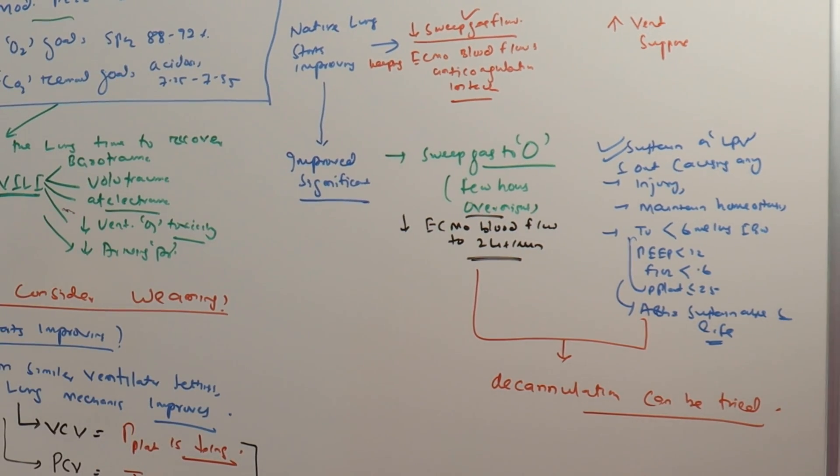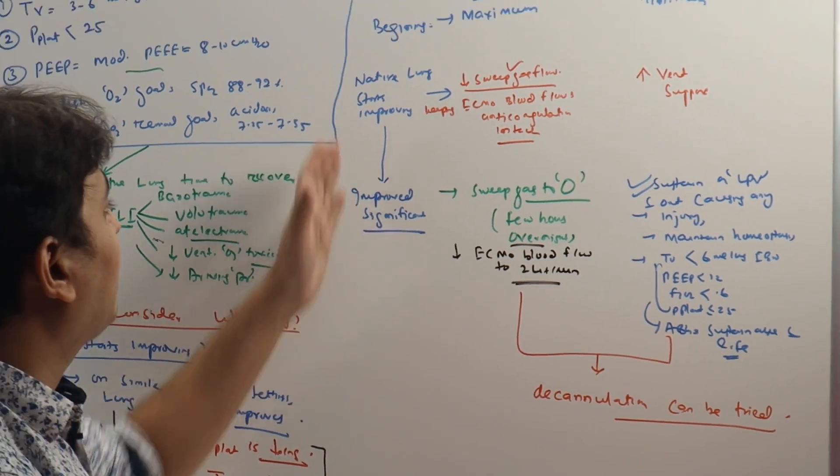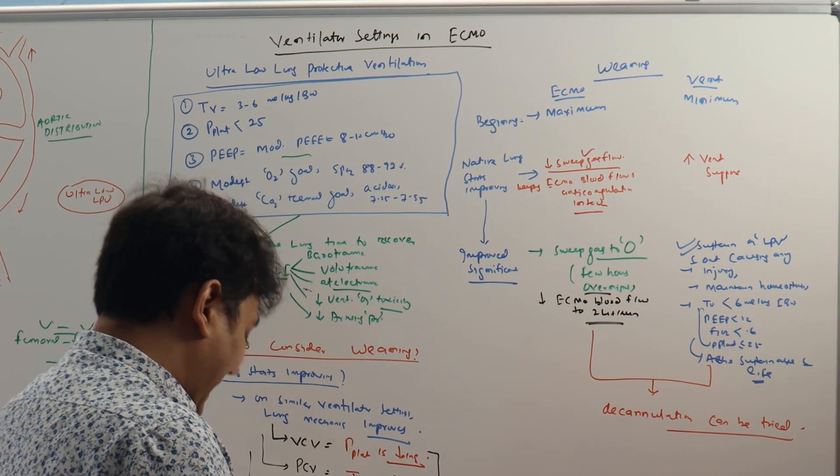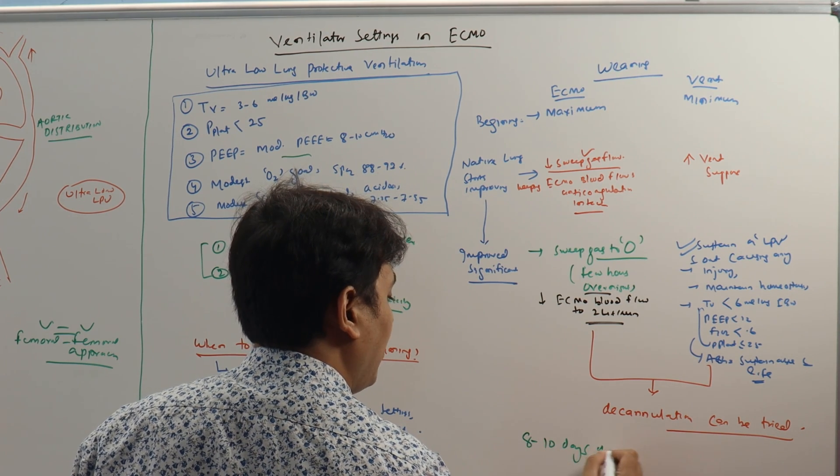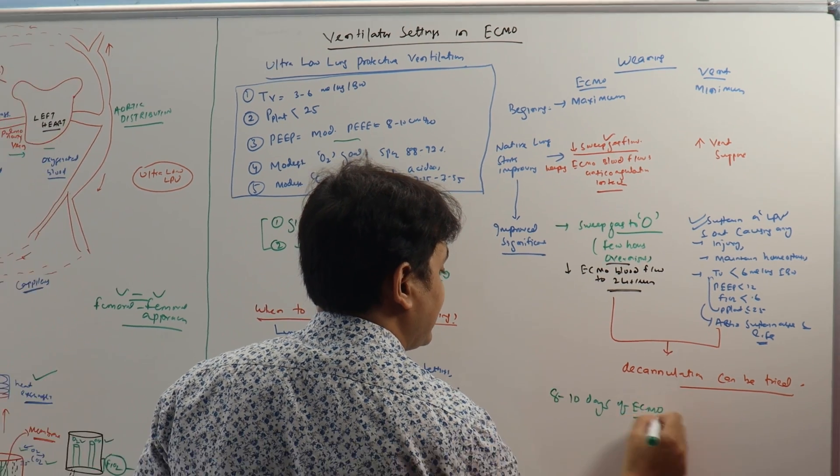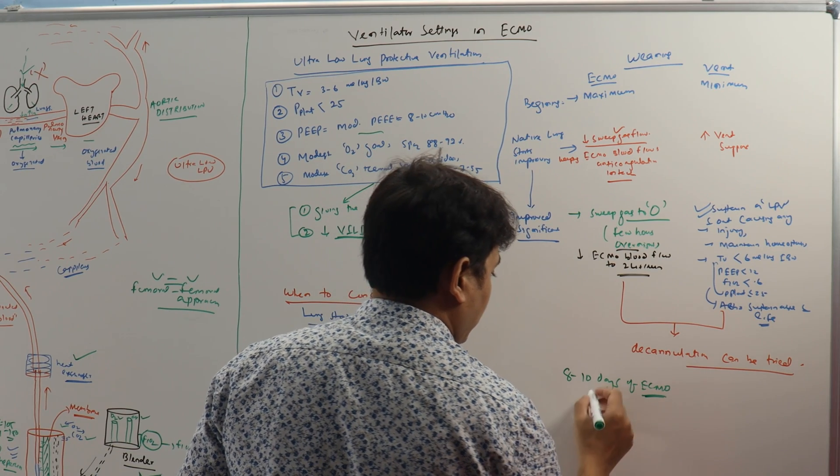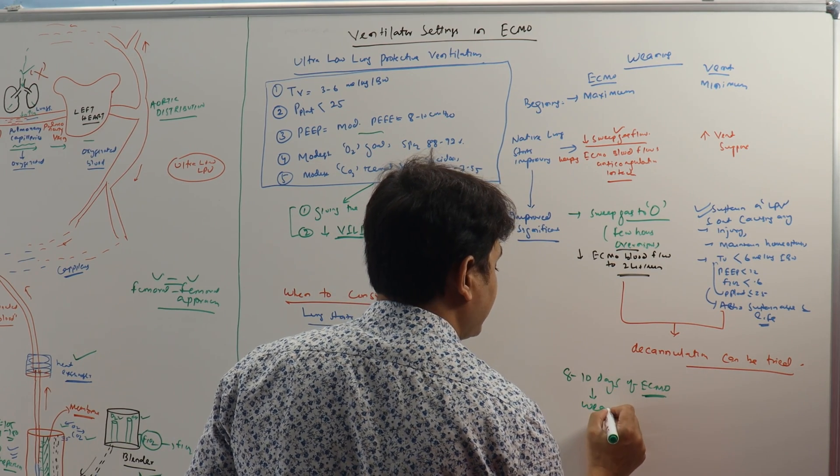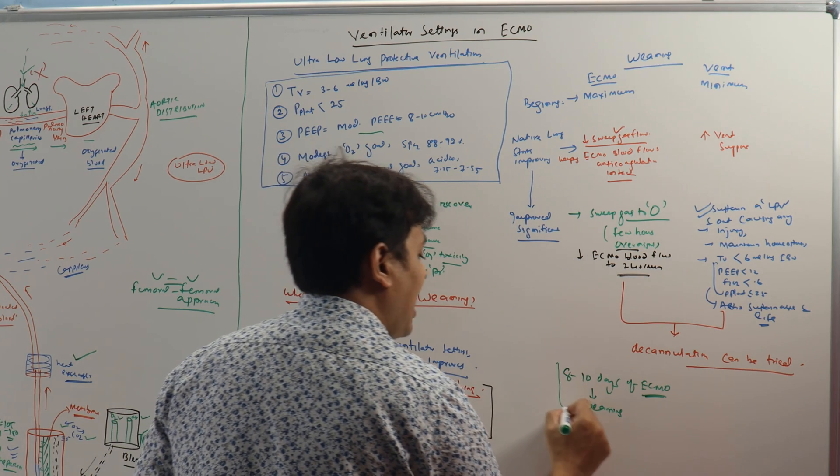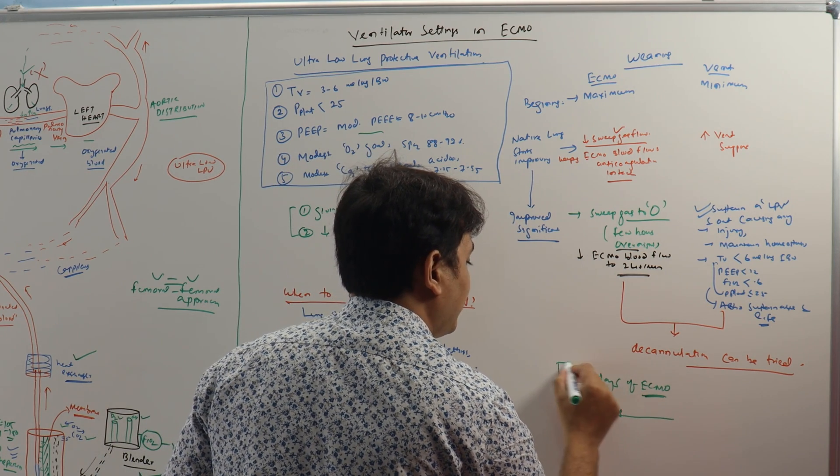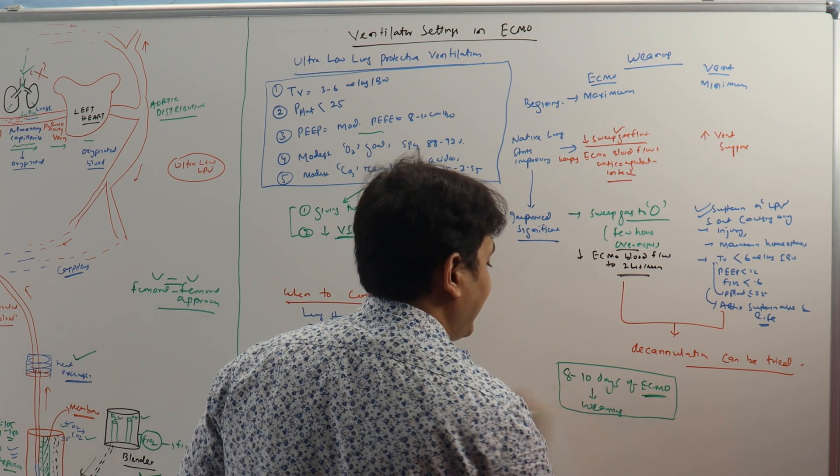This is how you plan to wean from ECMO. Usually in most of the cases it takes around 8 to 10 days of ECMO and it is at that time we can start weaning or consider weaning. If the person improves before, you can do that, but on average, majority of cases take around 8 to 10 days of ECMO for the lung to recover.